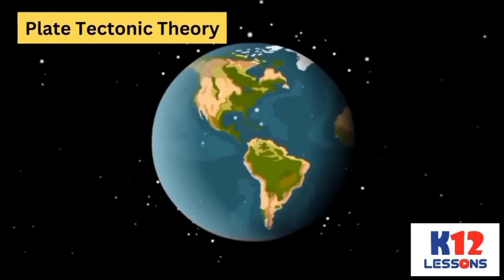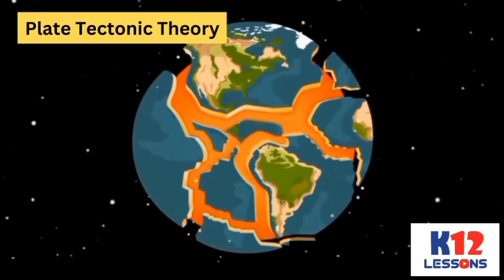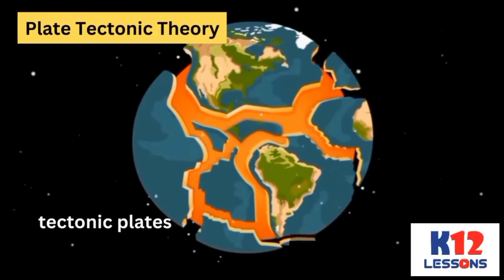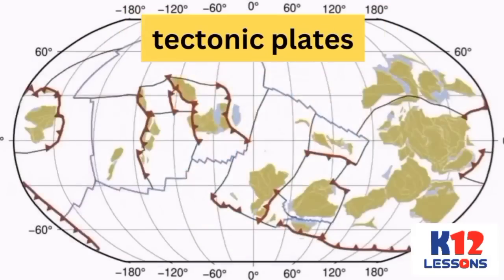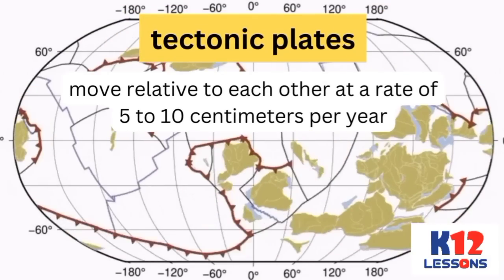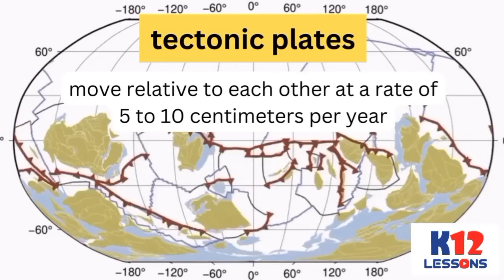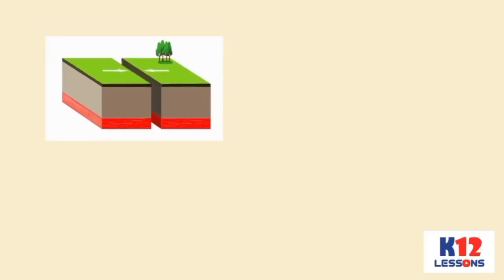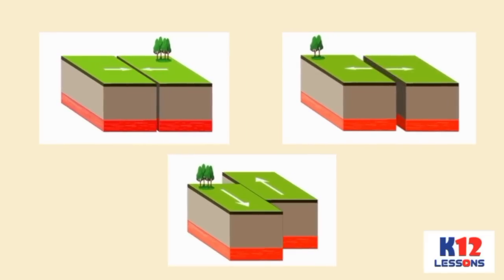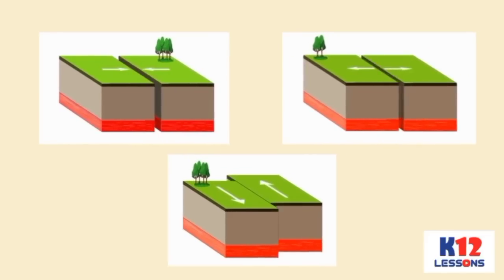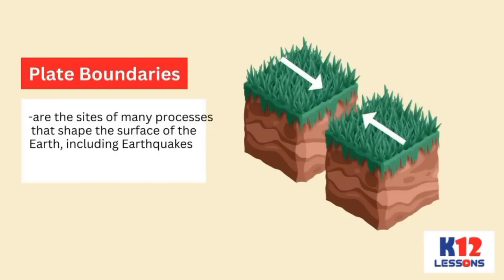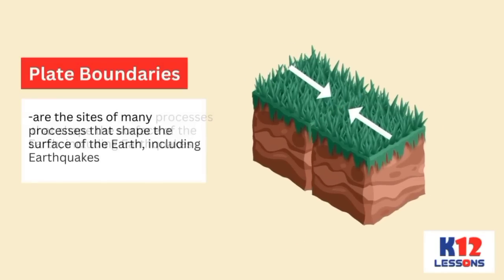According to the plate tectonic theory, the Earth's crust is broken into separate pieces called tectonic plates. These plates move relative to each other at a rate of 5 to 10 centimeters per year, and interact along their boundaries, where they converge, diverge, or slip past one another. Plate boundaries are the sites of many processes that shape the surface of the Earth, including earthquakes.